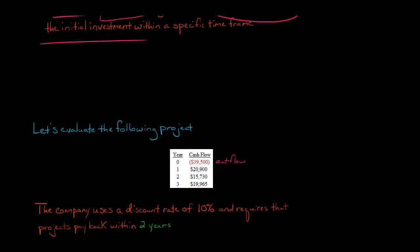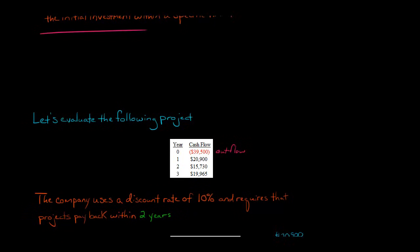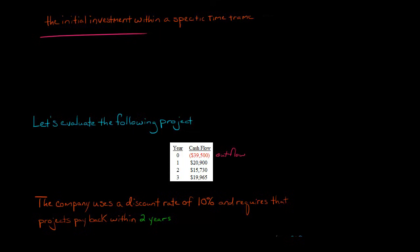Let's say that the company uses a discount rate of 10% and that it requires any of its projects, if it's going to do a project, it has to pay back within two years. And after discounting the cash flows, it has to be within two years. So if it's longer than two years for this project to pay back, we're not going to do it.